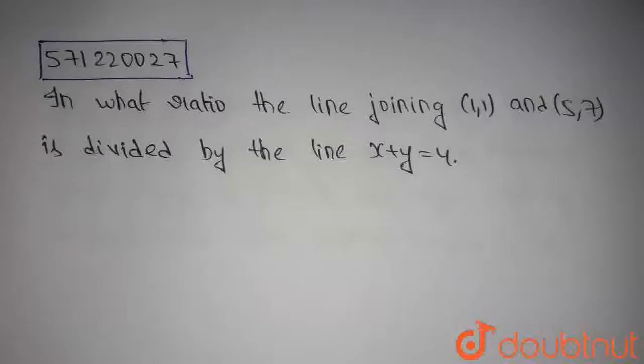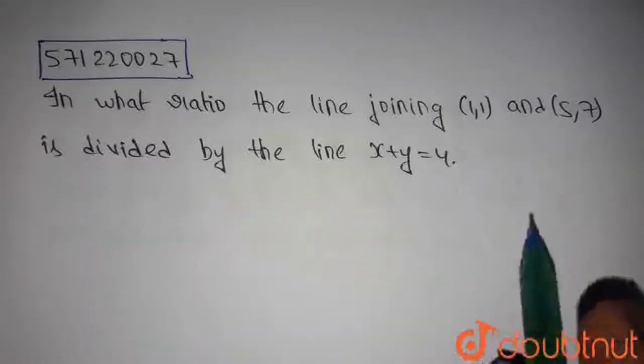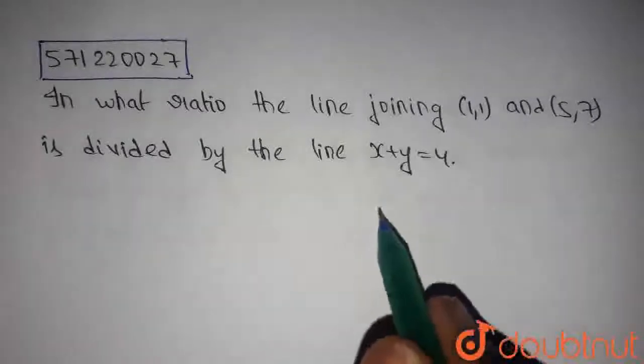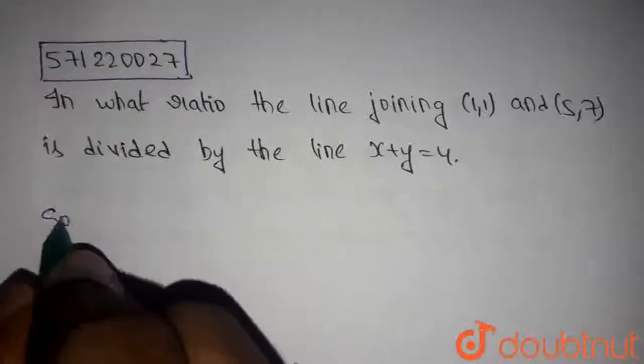Hello guys, this is our today's question. We have to find the ratio in which the line joining the points (1,1) and (5,7) is divided by the line x plus y equals 4. Let's get into the solution.